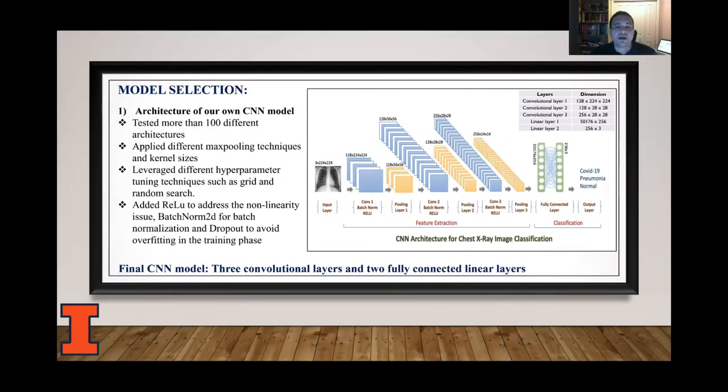Hi, let me talk about how we build, train, evaluate, and test our own CNN architecture model. So we start with a simple architecture with one convolution and two fully connected layers. We add max pooling techniques and different kernel size. We also address the non-linearity using ReLU and batch normalization. Finally, we include dropout between the fully connected layers to avoid overfitting.